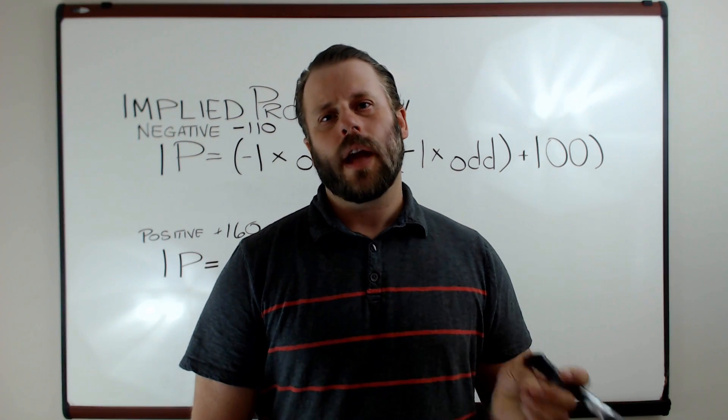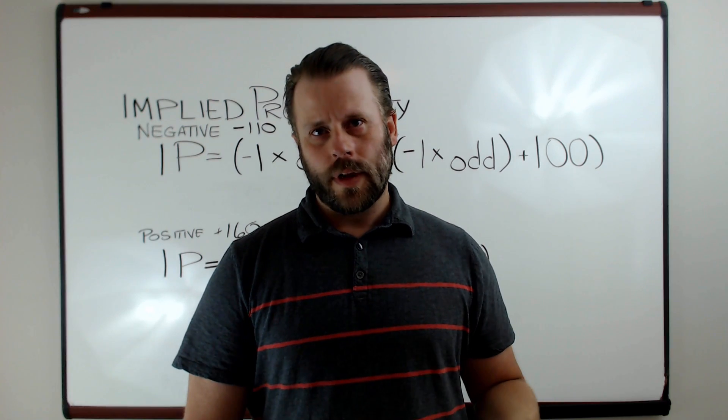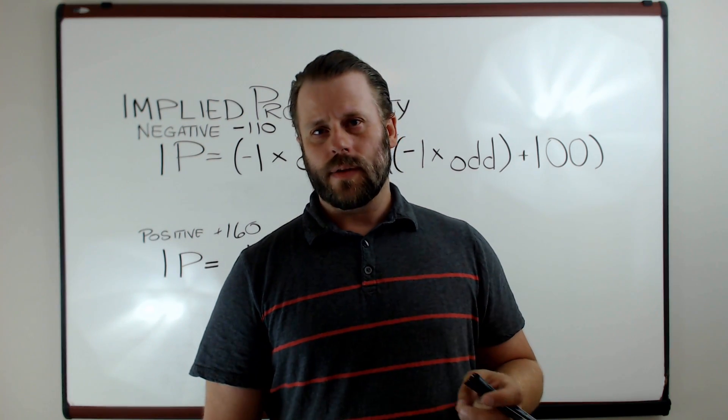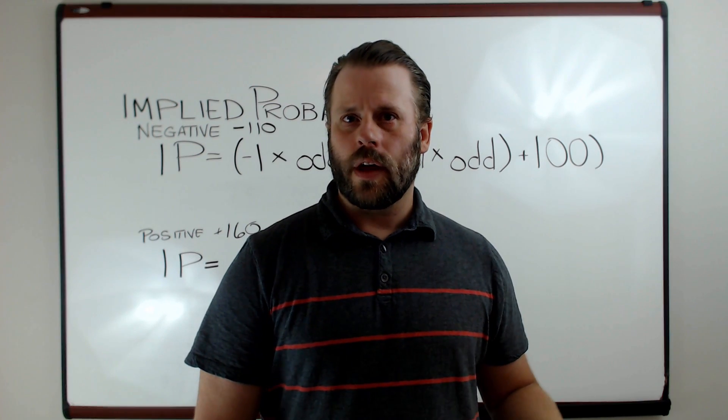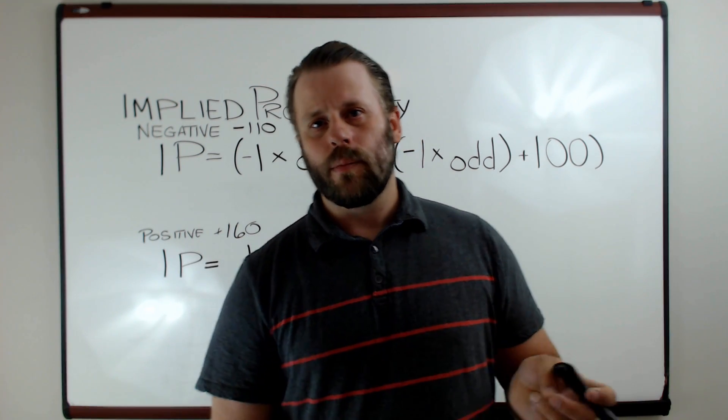There's two different ways for calculating implied probability with American odds: one for the negative side and one for the positive side. I'm going to work through a couple of examples here that should help illustrate what implied probability means.